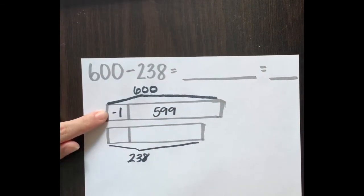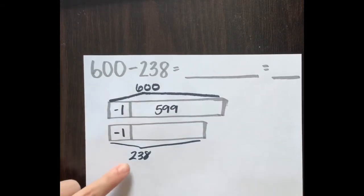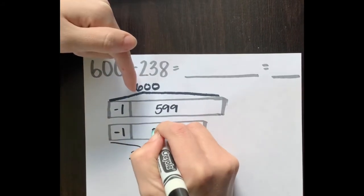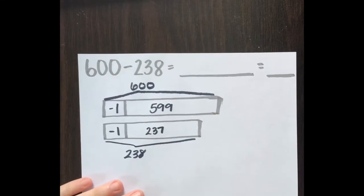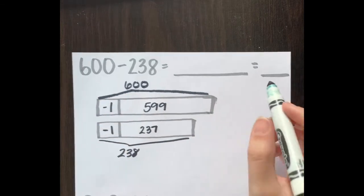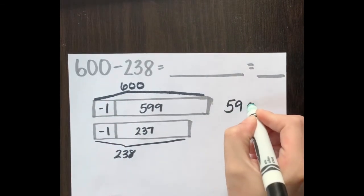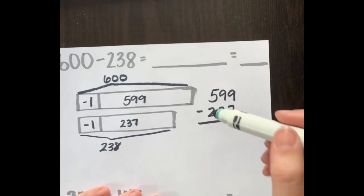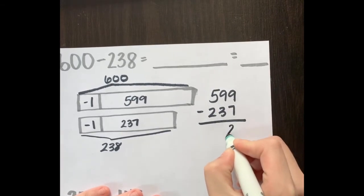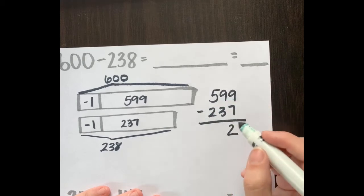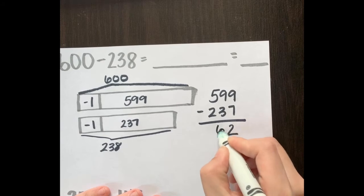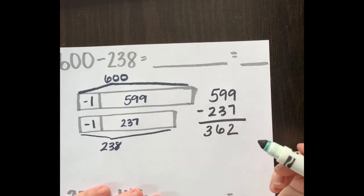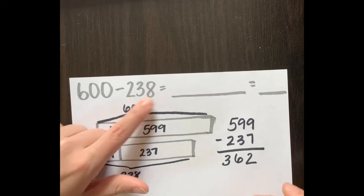Whatever I do to one number I must do to the other. 238 minus 1, counting down: 238, 237. That's my new problem: 599 minus 237. I'll write that vertically and solve. Ones place: 9 minus 7 is 2. 9 minus 3 is 6. 5 minus 2 is 3.